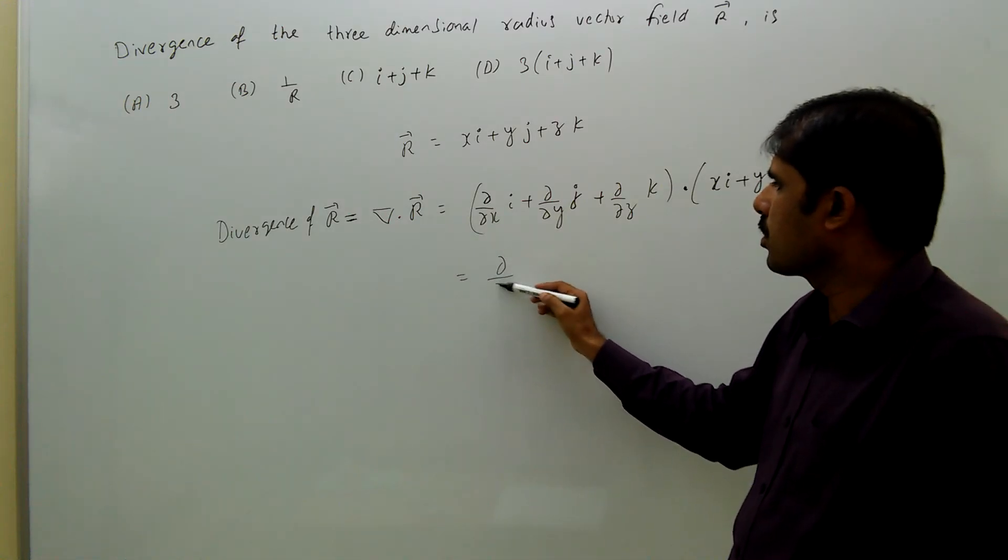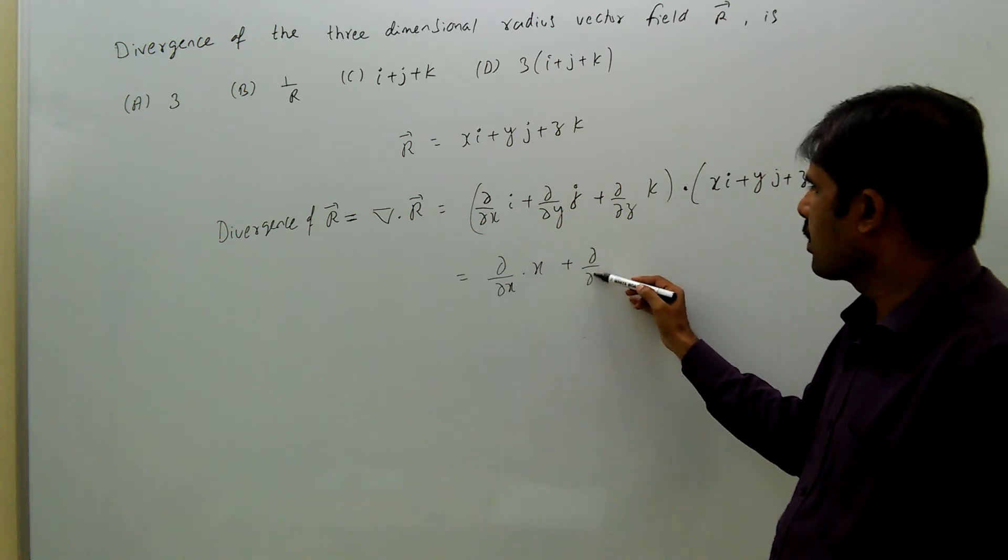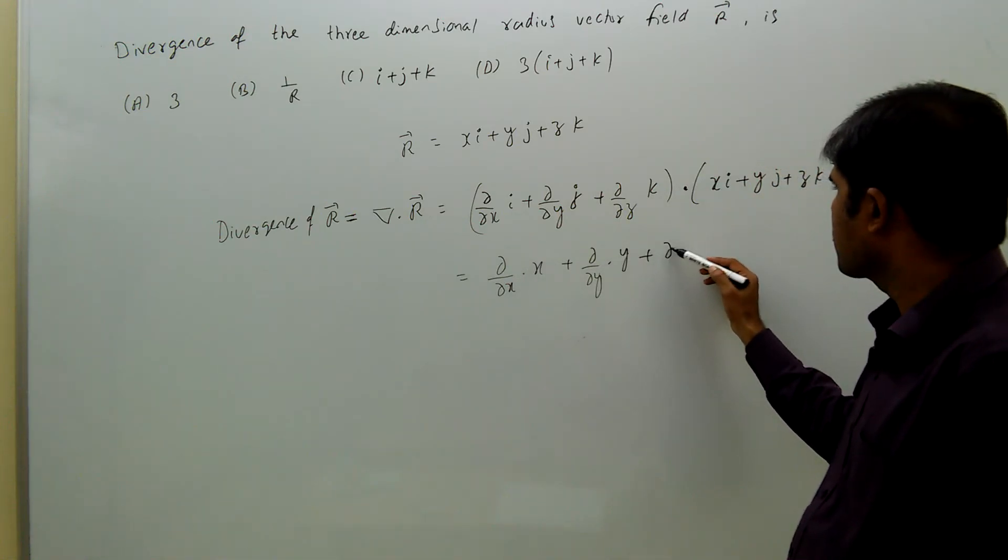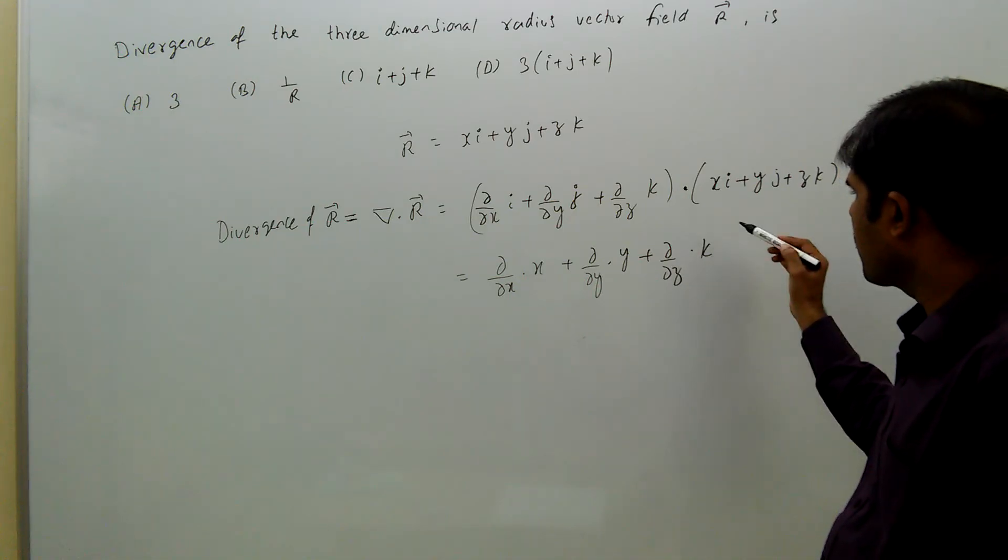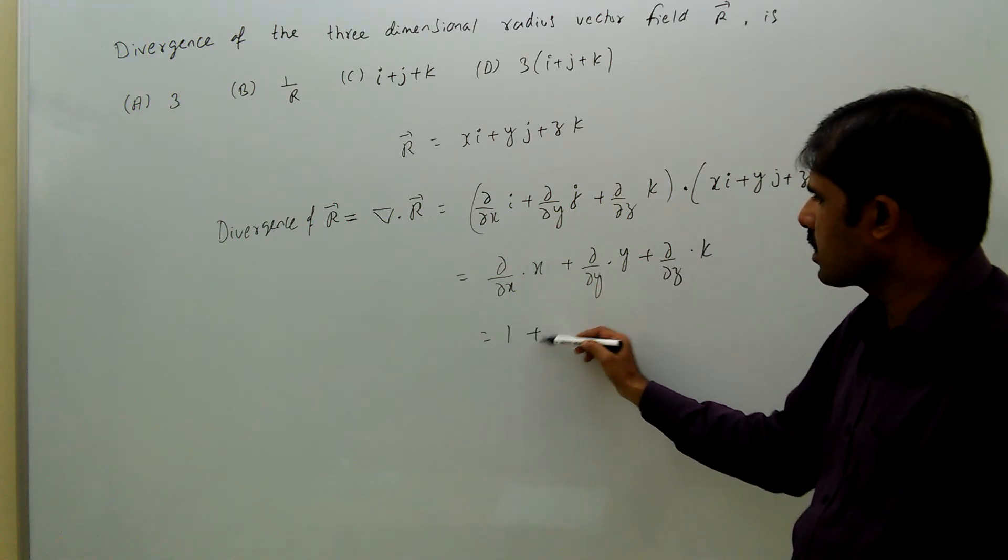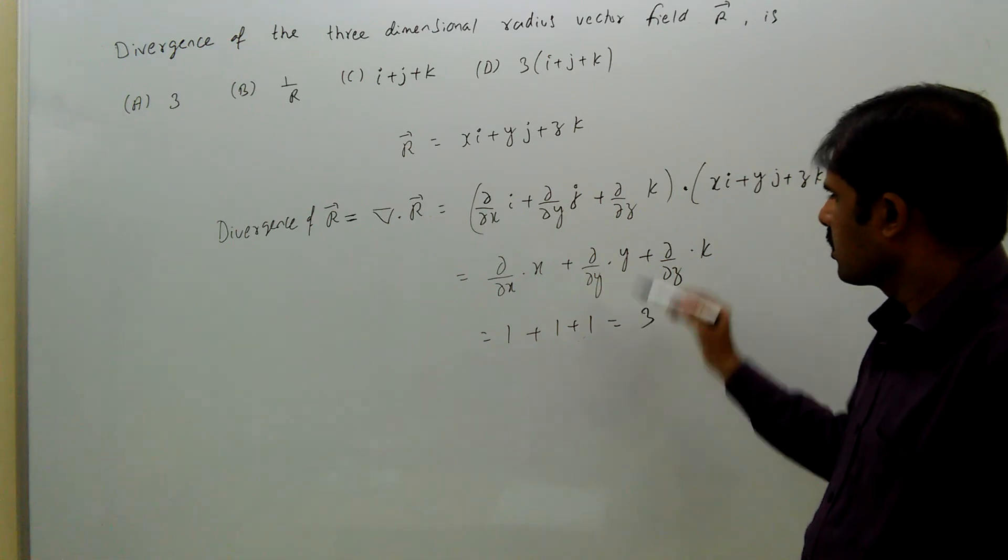That is equal to del by del x of x, plus del by del y of y, plus del by del z of z. That is equal to 1 plus 1 plus 1, that is equal to 3. Option is A.